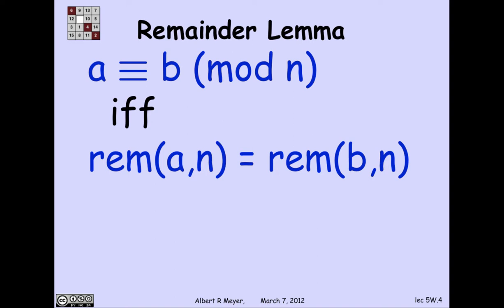Another way to understand congruence and what it's really all about is the so-called remainder lemma, which says that a is congruent to b mod n if and only if a and b have the same remainder on division by n.